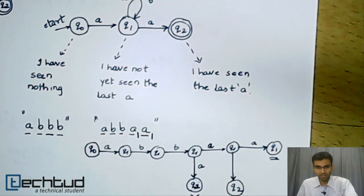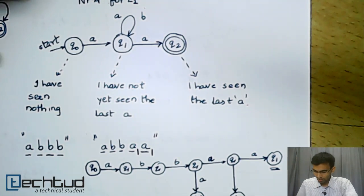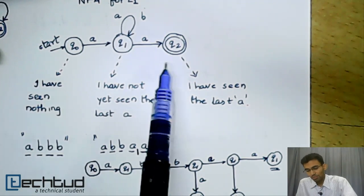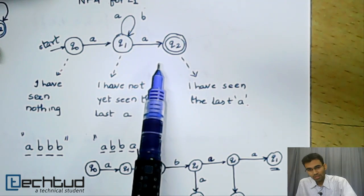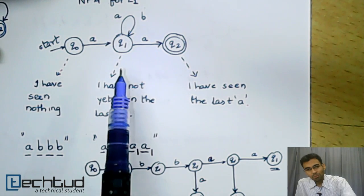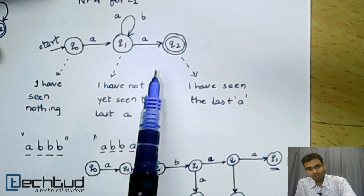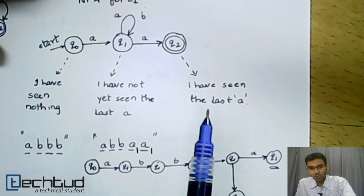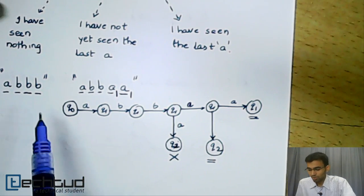A very short recap. A string will be accepted by the NFA if any one path in the NFA leads you to a final state. Any one path. In this particular exploration, this particular path did not lead us to a final state.